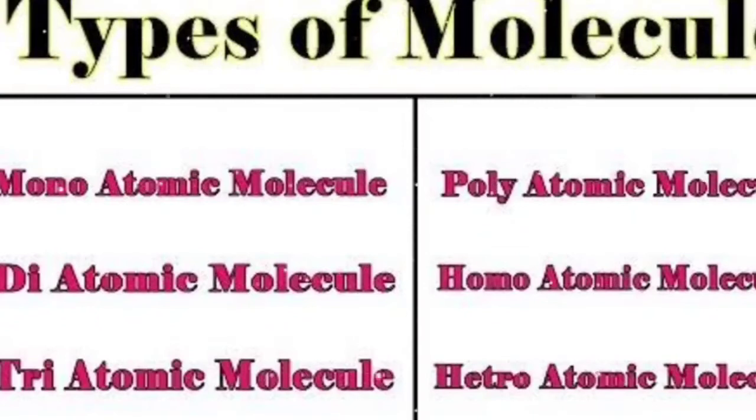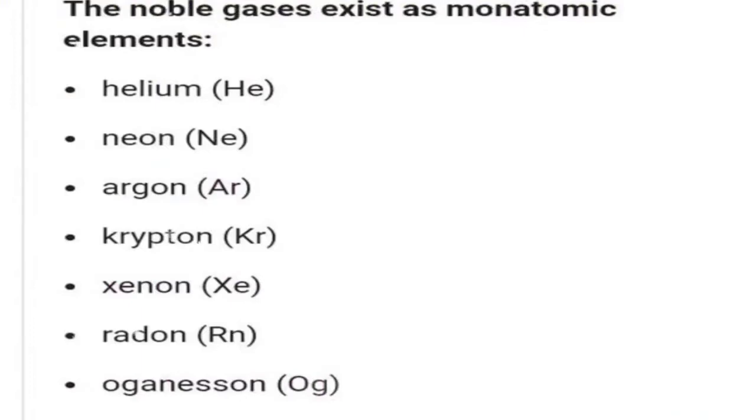So on the basis of number of atoms, the first type is monatomic molecule, then diatomic, triatomic, and polyatomic molecule. The second classification depends upon the type of atoms: homoatomic and heteroatomic molecule.